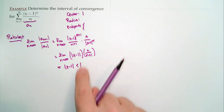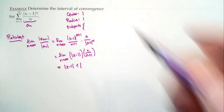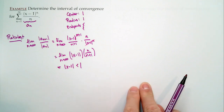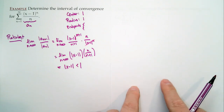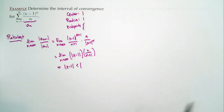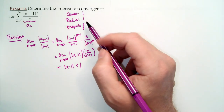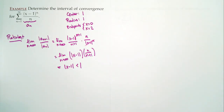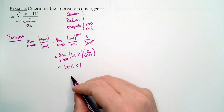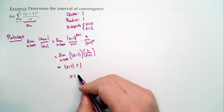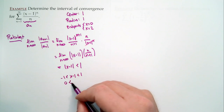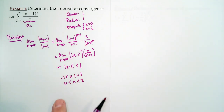By the ratio test, this converges when |x minus 1| < 1. So our radius is 1. Our endpoints: starting at center 1, go 1 in each direction. We end up at 0 and at 2, because 1 minus 1 = 0 and 1 plus 1 = 2. Another way: drop the absolute value, so x minus 1 is between negative 1 and 1; add 1 to all sides: 0 < x < 2. Our endpoints are at 0 and 2.